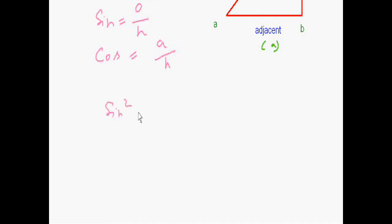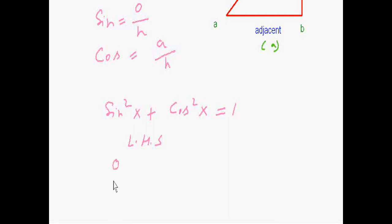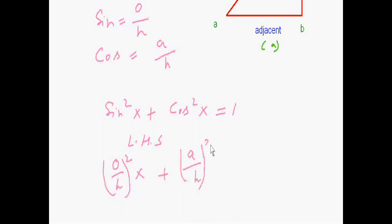Taking the left hand side: sin²x + cos²x. Sin²x means (opposite / hypotenuse)² plus cos²x means (adjacent / hypotenuse)².